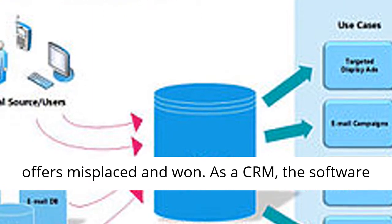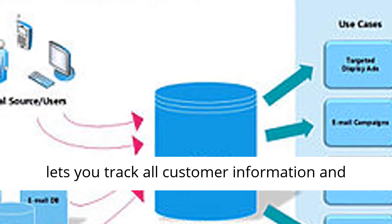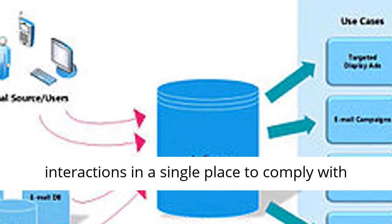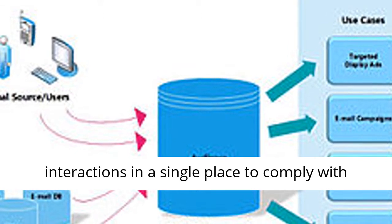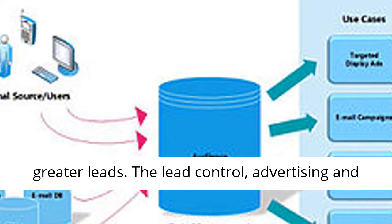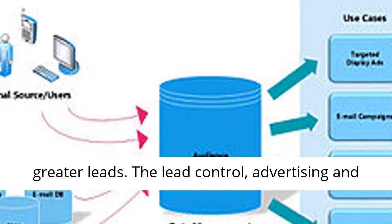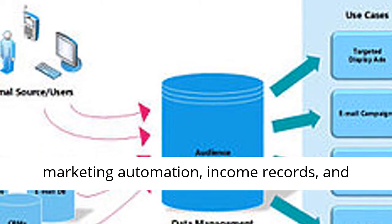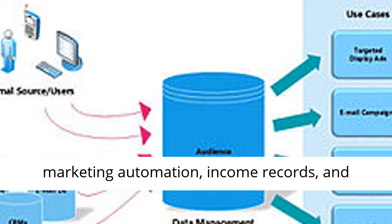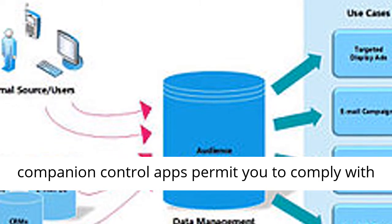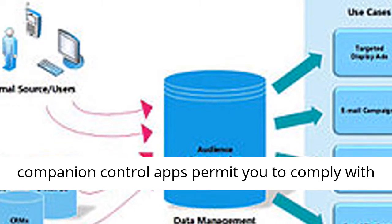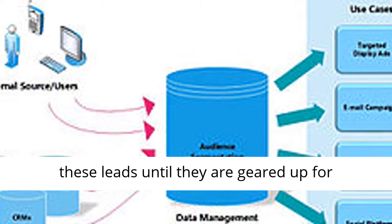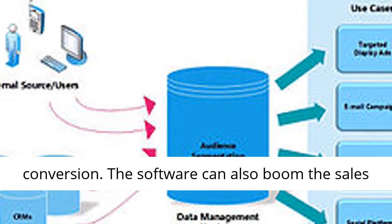As a CRM, the software lets you track all customer information and interactions in a single place to follow more leads. The lead management, marketing and advertising automation, sales data, and partner management apps allow you to follow these leads until they are ready for conversion.